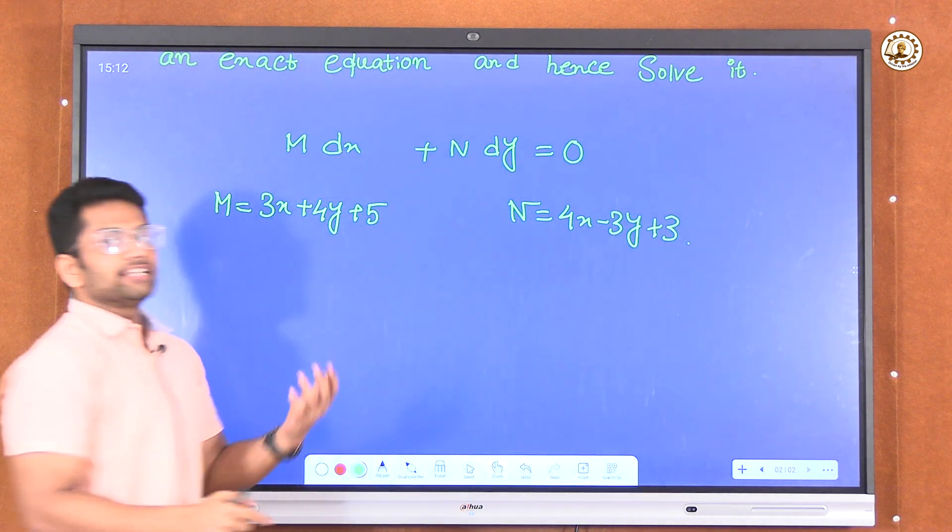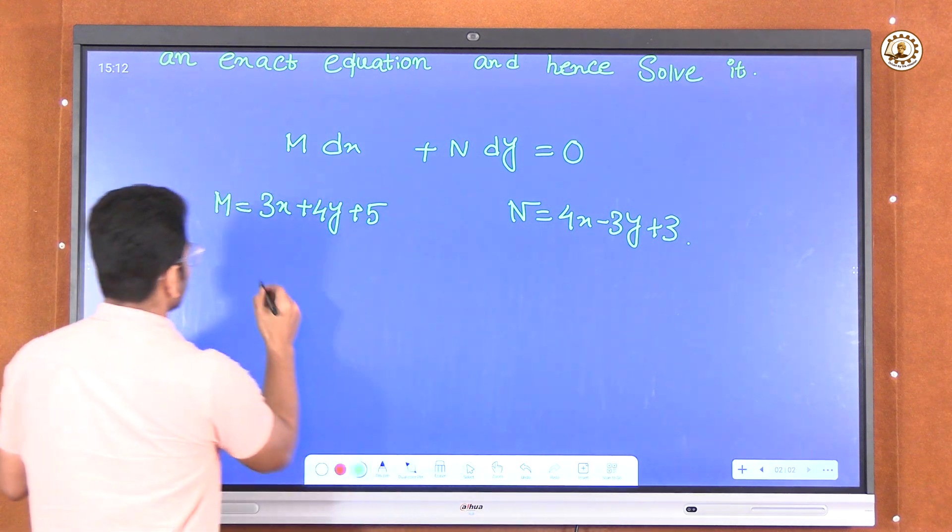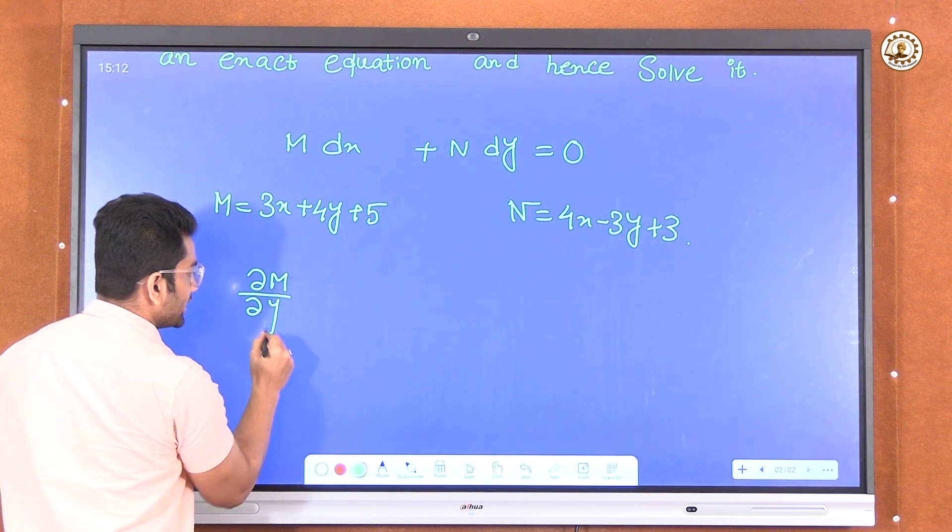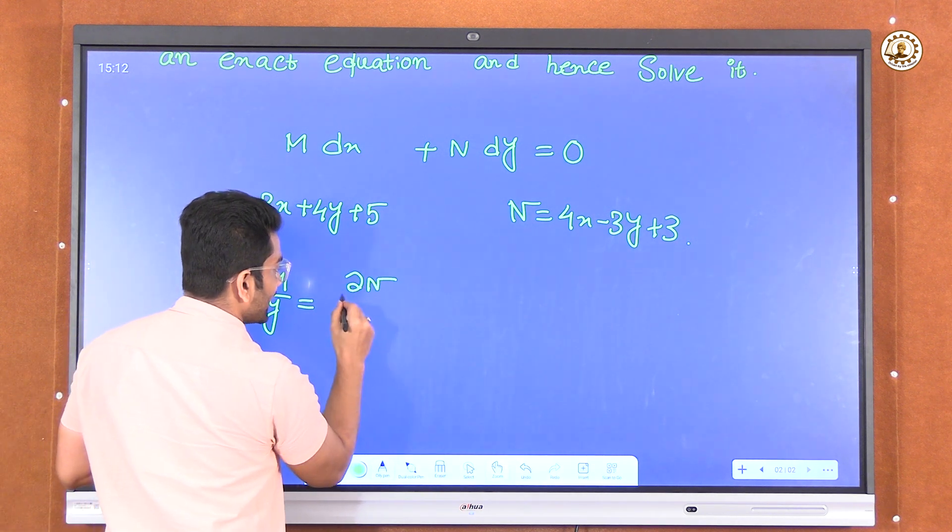For a differential equation to be exact, we know that ∂M/∂y should be equal to ∂N/∂x.